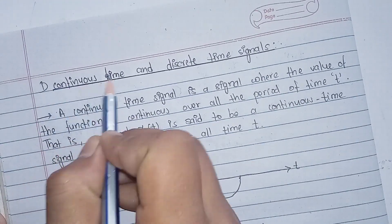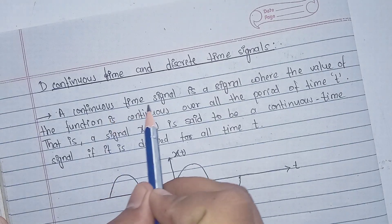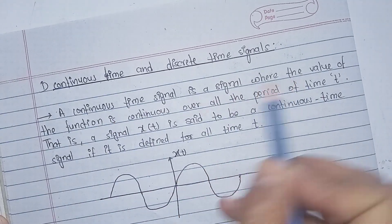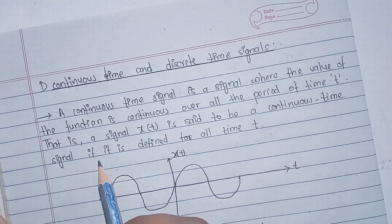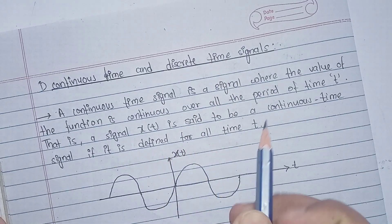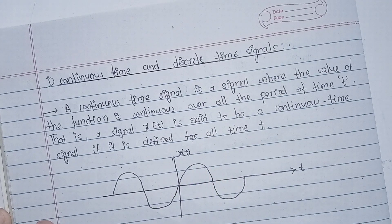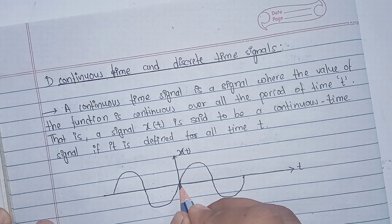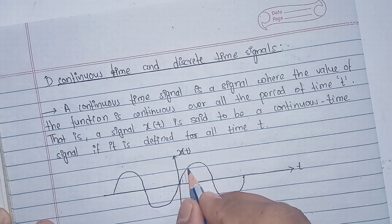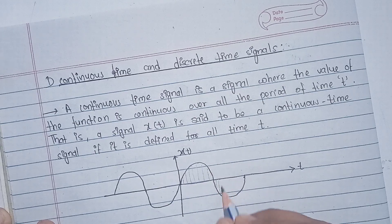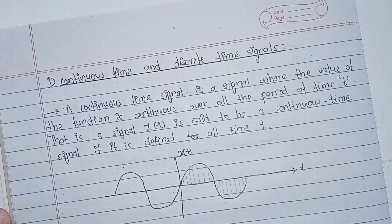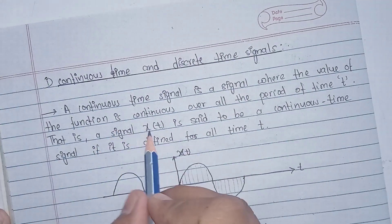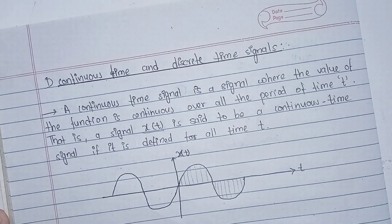The first type is a continuous time signal. A continuous time signal is a signal where the value of the function is continuous over all the period of time t. That is, a signal x(t) is said to be a continuous time signal if it is defined for all time t — meaning t can equal any value: 0, 1, 2, 3, or any time value. This is a continuous time signal.